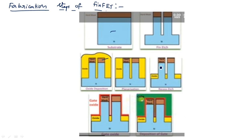Gate oxide is deposited to isolate the channel from the gate by a thermal oxidation process — the gate oxide is deposited over the fins. Then a highly doped n+ polysilicon gate layer is formed and deposited over the fins. So all these fabrication steps are: substrate, fin etch, oxide deposition, planarization, etching the oxide layers on unwanted areas, depositing the required fin, creating oxide layers, and metallization for connections.